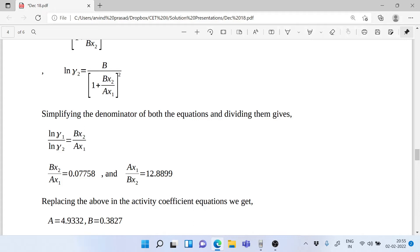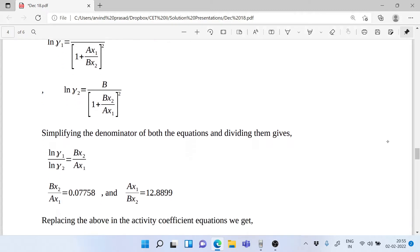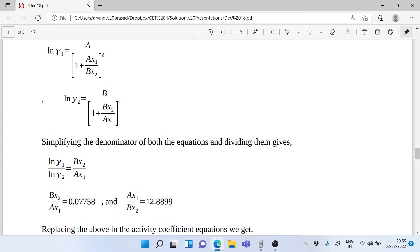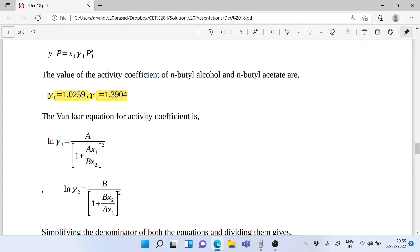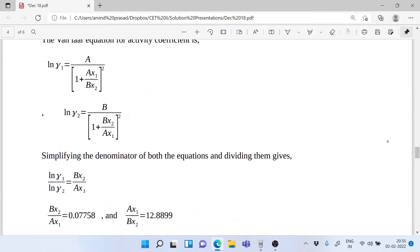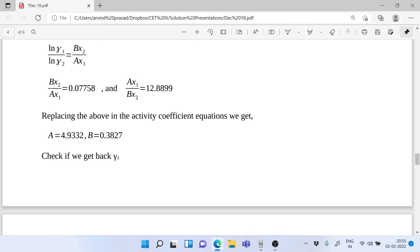Now you replace these values and you get back A and B. Remember, you have ln γ₁ and ln γ₂, these values are available to you because γ₁ and γ₂ are available to you. So put in γ₁ here, put in γ₂, solve it, you get the value of A and B.